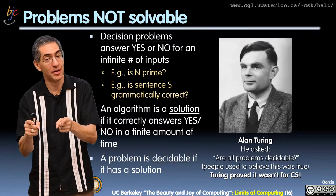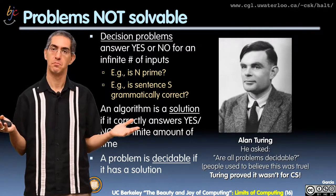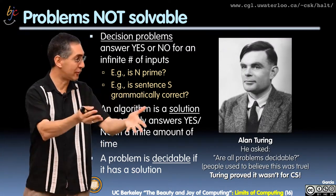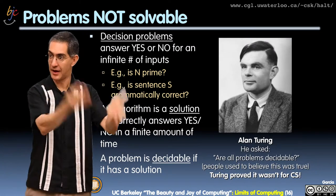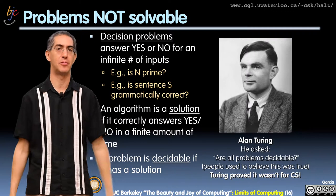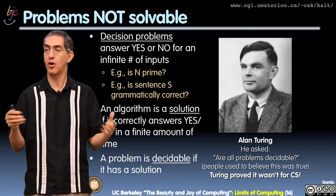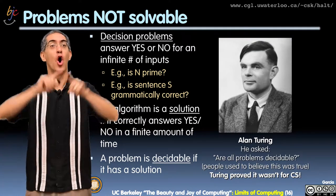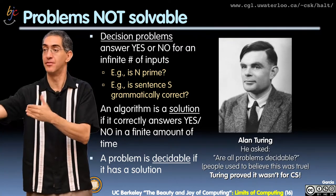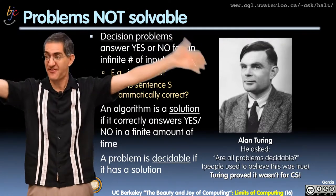A problem is decidable if there exists a solution. So, is the prime number problem decidable? Yes — I can write an algorithm that won't crash, that will not go on forever, and will figure out whether a number is prime. You can do a very simple prime number calculation. So prime number? Yes, that's decidable. And so people thought that all questions were decidable — that there are no undecidable problems. Everything can be done with a yes or no answer.